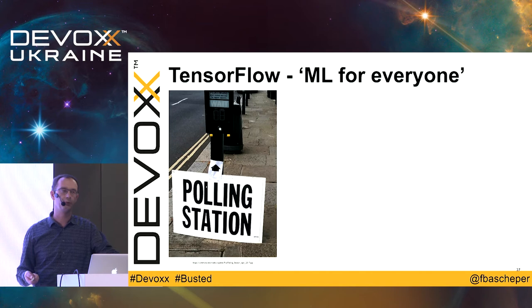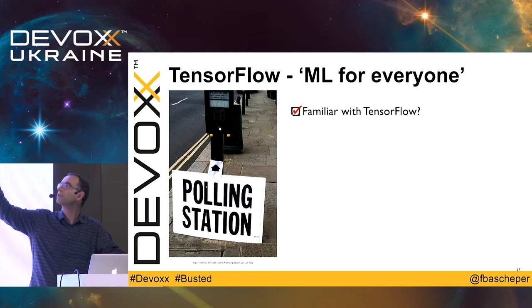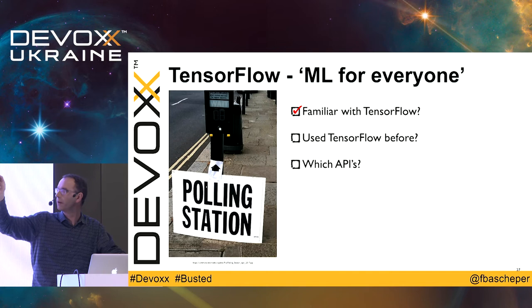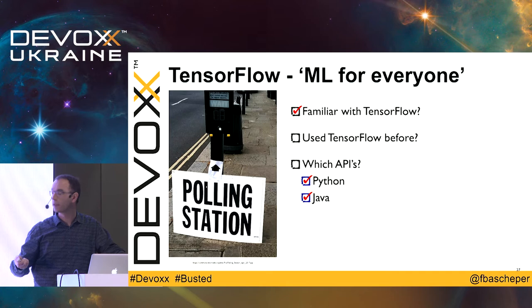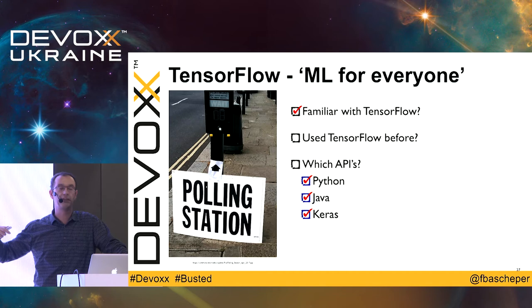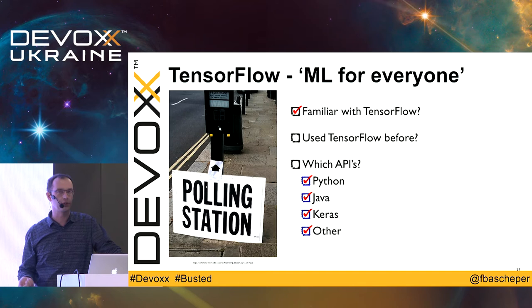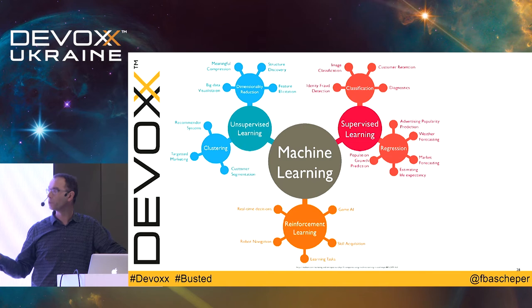How do you add TensorFlow to this? TensorFlow promotes itself as machine learning for everyone — let me say I have some doubts about this. Is anyone familiar with TensorFlow? Have you used it? Which APIs — Python, Java, JavaScript? Keras is also an option — it's basically a layer on top of TensorFlow. JavaScript is also supported for TensorFlow now.